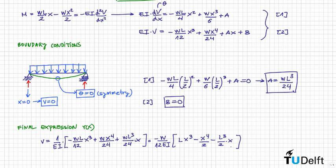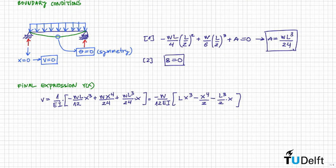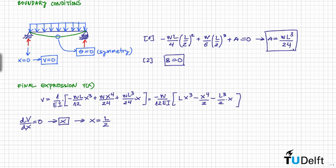The problem asks for the maximum deflection of the beam. Without solving, we can see that the maximum deflection occurs at x = L/2. If that is not obvious, we can set dv/dx equal to zero and solve for x, and we find that x = L/2. Substituting this into the deflection formula gives us the maximum deflection of the beam.